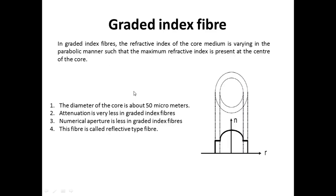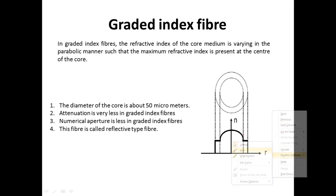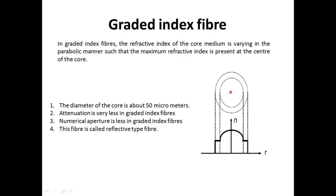In case of graded index fiber, the refractive index of the core is not constant or uniform, but it is varying in a parabolic manner such that the maximum refractive index is present at the center of the core. As you can see, the refractive index is maximum at the center and goes on decreasing as we travel from the center toward the interface between core and cladding.